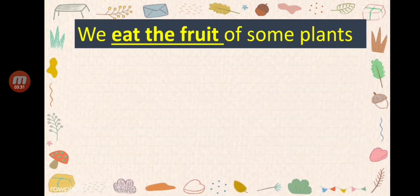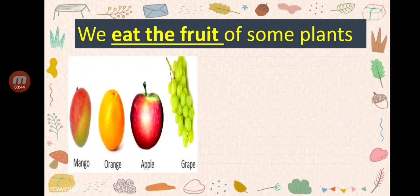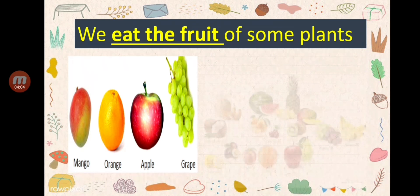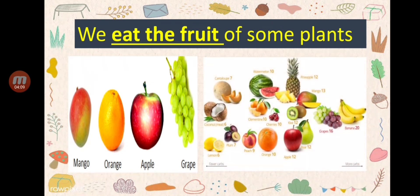We eat the fruit of some plants. I know all of you are familiar with plants that we can eat their fruits. The first examples are mango, orange, apple, and grape. Next are coconut, cantaloupe, watermelon, pineapple, banana, pear, peach, plum, and lemon. All of these are examples of plants that we can eat their fruit.